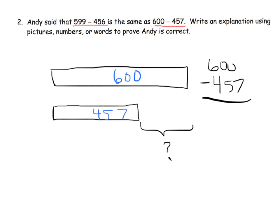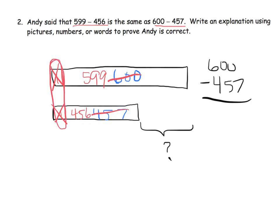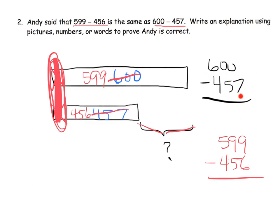What Andy is saying is: what if we chop off 1 from each tape — 1 from the 600 and 1 from the 457? That makes this 599 and this 456, and the gap itself doesn't change — we're just chopping 1 from each diagram, so the gap stays the same. That means 599 minus 456 gives the exact same answer as 600 minus 457 because the gap on both problems is identical. The answer is 143 in both cases.